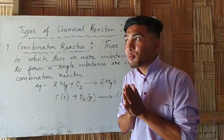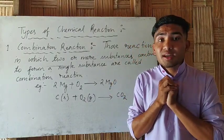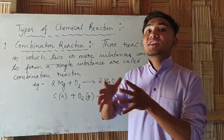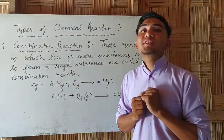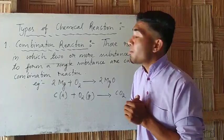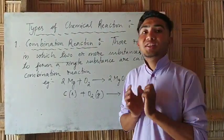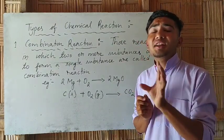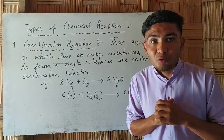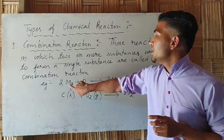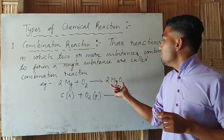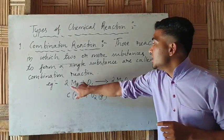Those reactions in which two or more substances combine to form a single substance are called combination reactions. In a combination reaction, two or more substances combine to form a single product. For example, if magnesium and oxygen are used, magnesium reacts with oxygen to form magnesium oxide, which is the single substance product.